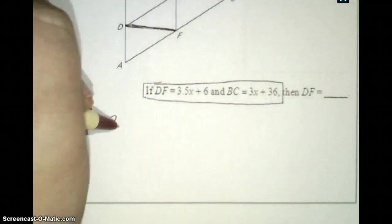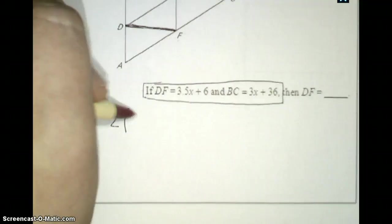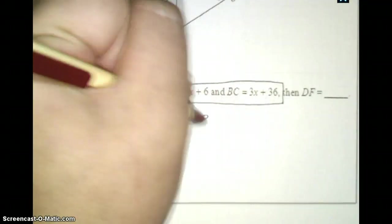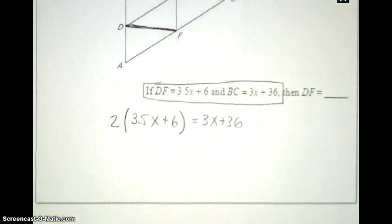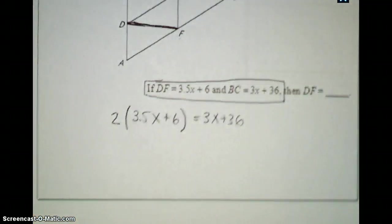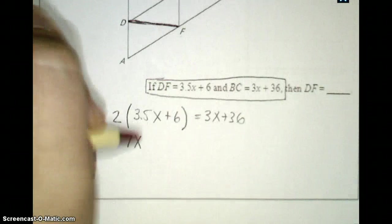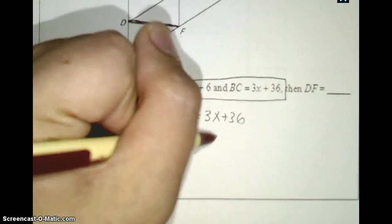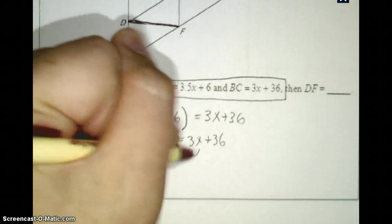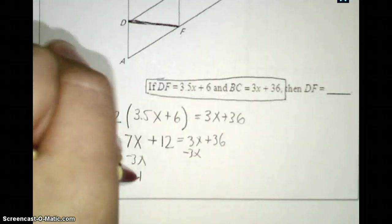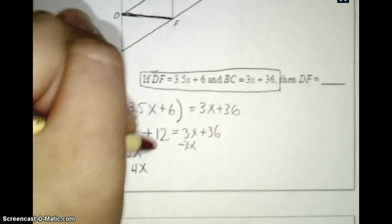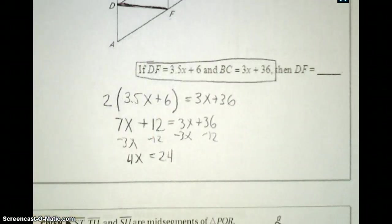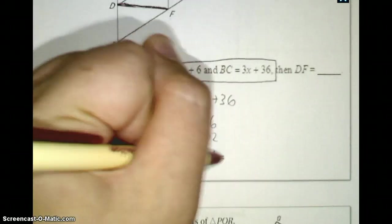What I instead need to do is focus on the fact again that DF is half the length of BC based on the midsegment theorem. So I can set my equation up in one of two ways. We'll stick with the same way I did the previous problem. I'll multiply the smaller segment by 2, so it'll be 2 times (3.5x + 6), and that's going to equal 3x + 36. Again, this is just a normal algebraic equation, so this will end up being 7x, 6 times 2 gives you 12. And from here now, it's just your standard old solving equation problem, so that's going to be 4x. I subtract the 12 over to the other side, that's going to give me 24, and 24 divided by 4 gives you an x value of 6.